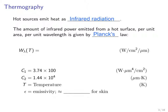The amount of infrared power emitted from a hot surface per unit area per unit wavelength is given by Planck's Law. Planck's Law says that the infrared power W_lambda(T) — a function of both wavelength and temperature — is equal to the emissivity epsilon (which is wavelength dependent) times constant C1, divided by the wavelength raised to the fifth power, times e to the power of C2 divided by lambda times T (temperature in Kelvin), minus one.